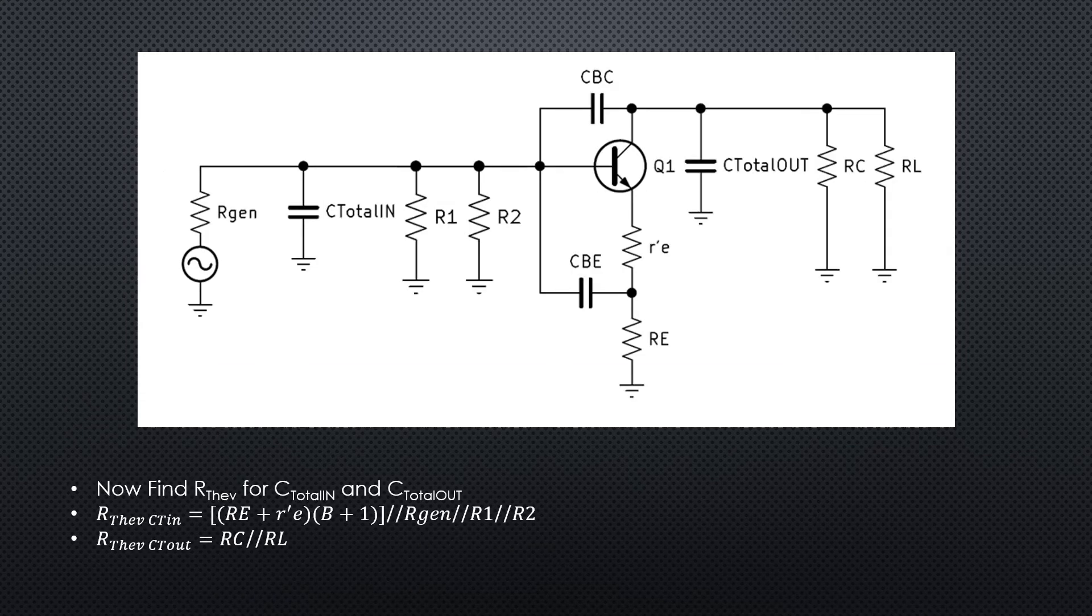Here we've added up all our input and output capacitances and we've got C total in and C total out. Now we can thevenize from those two capacitors and find R thevenin C total in and R thevenin C total out.